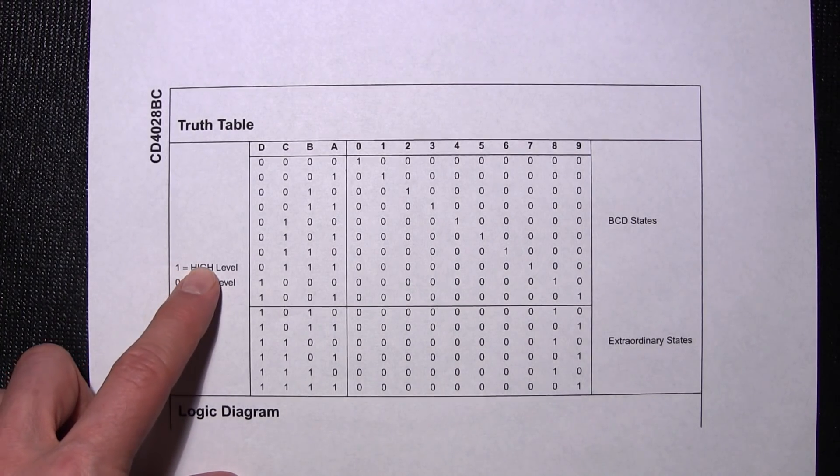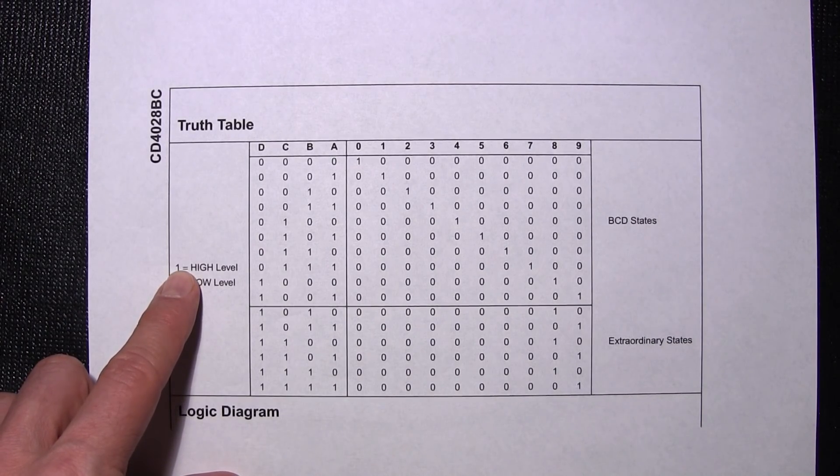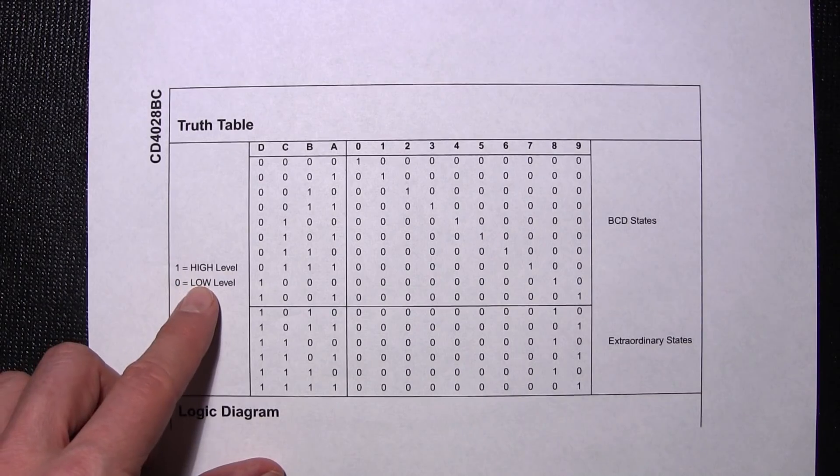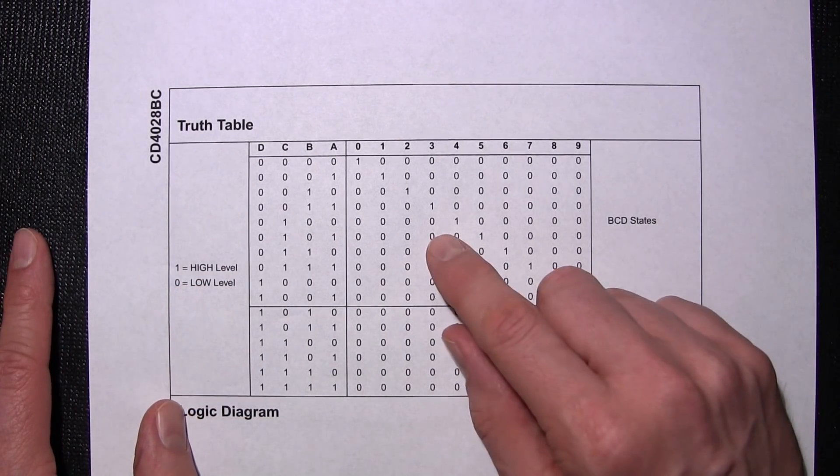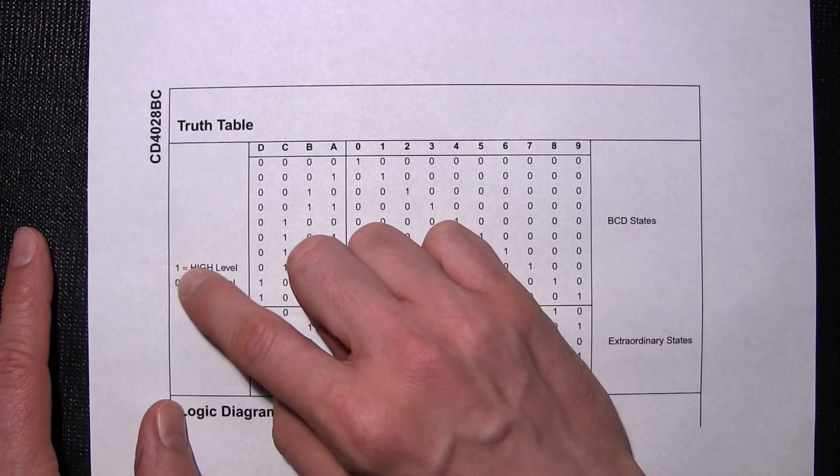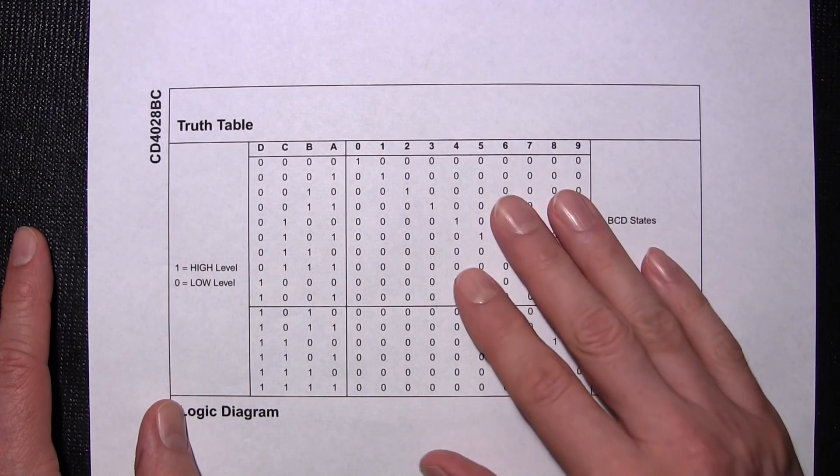So you see here 1 equals high, 0 equals low. Well 1 which equals high basically means positive and 0 equals low which equals negative. So if this IC was to be running at 5 volts DC, 1 would equal 5 volts, 0 would equal ground or very close to.